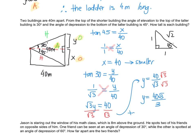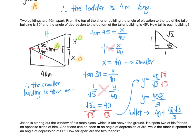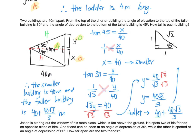To find the taller building, I'm going to add X and Y: 40 plus 40 root 3 over 3. So, the therefore statement: the smaller building is 40 meters, and the taller building is 40 plus 40 root 3 over 3 meters. If you wanted to, you could get a common denominator — 40 over 1, multiply top and bottom by 3 to get 120 over 3, giving 120 plus 40 root 3, all over 3. You can also represent the height that way.